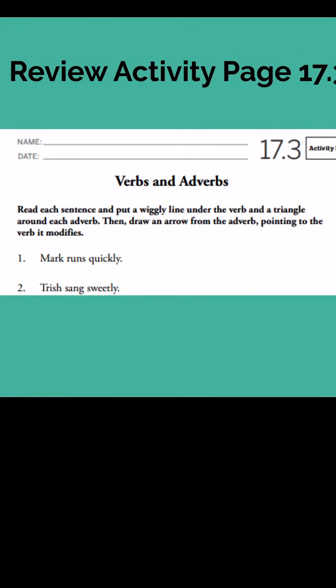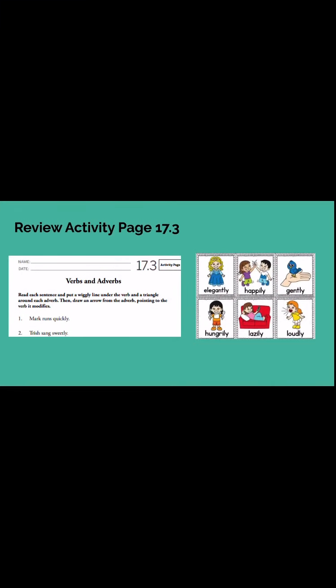Let's take a look at number one: 'Mark runs quickly.' What's the verb in that sentence? If you said 'runs,' you are correct. Draw that wiggly line under 'runs.' And then what is the adverb — what word is describing 'runs'? Yes, 'quickly,' right? Draw a triangle around the word 'quickly.' And for our last step, draw an arrow from the adverb pointing to the verb — so you're drawing an arrow from 'quickly' to 'runs,' because that is the word that is describing 'runs.'